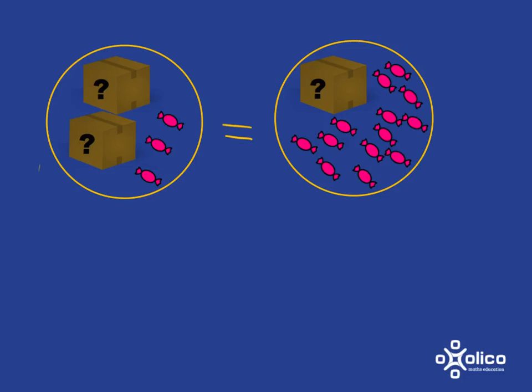We can represent this situation by an equation. If we think of x as being the number of sweets in the box, then what we have is x sweets and another x sweets here. So x and x is 2x plus 3 spare sweets.